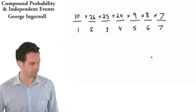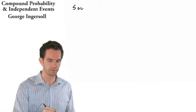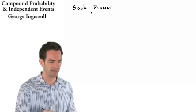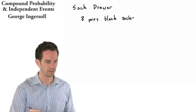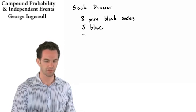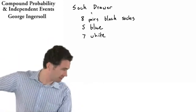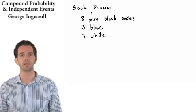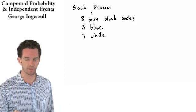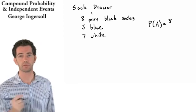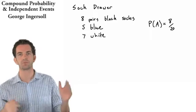Let's say I have a sock drawer with 8 pairs of black socks, 5 blue, and 7 white. It's dark and I reach in and pull out a pair of socks. What's the probability of those socks being black? The probability of pulling out a black sock is 8 over 20 total pairs, which is 2/5, or 40%.